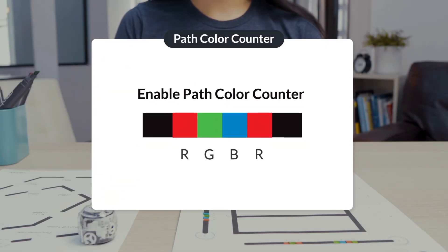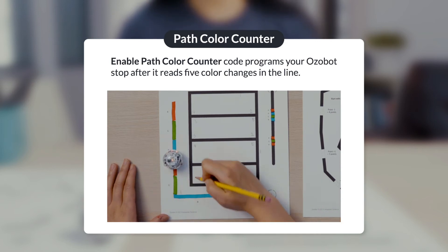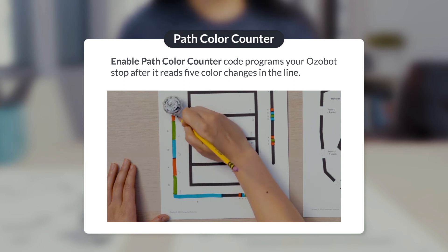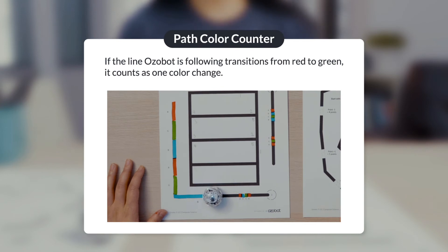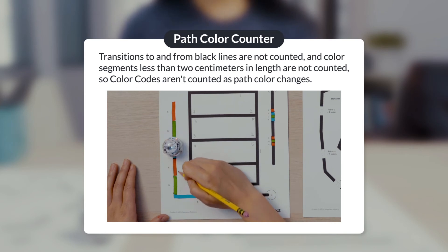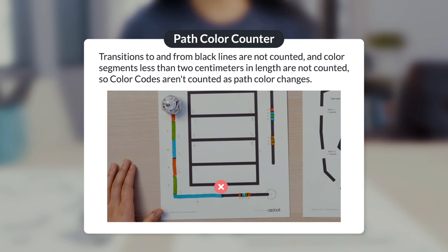The third counter you'll learn about is the enable path color counter. This counter code programs your Ozobot to stop after it reads five color changes of red, blue, or green in the line. If the line Ozobot is following transitions from green to red, it counts as one color change. Transitions to and from black lines are not counted, and color segments less than two centimeters in length are not counted. So color codes aren't counted as path color changes.